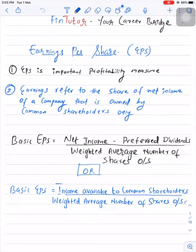When it comes to earnings per share, earnings refers to the share of net income that is owned by only common shareholders, not preference shareholders. The formula to calculate earnings per share is: net income minus preferred dividends, divided by weighted average number of shares outstanding.